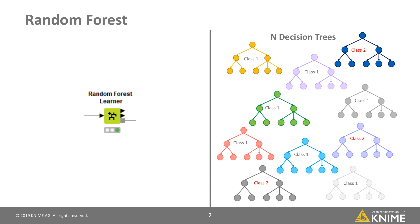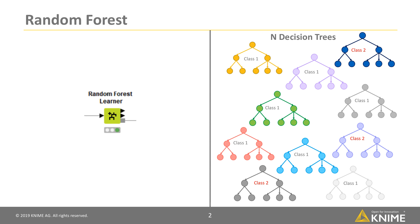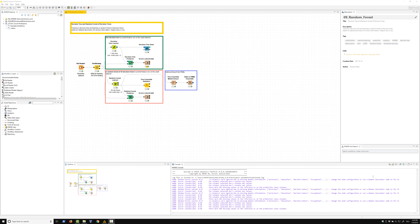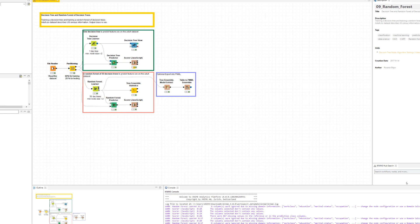KNIME Analytics Platform has one node named Random Forest Learner to train a random forest of N decision trees. Summarizing, the three parameters for a random forest are the number N of decision trees and all three parameters available when training a decision tree. So the Random Forest Learner node must offer these parameters in its configuration window.